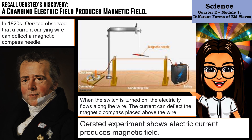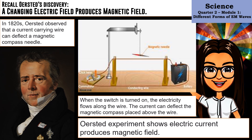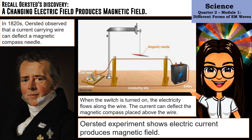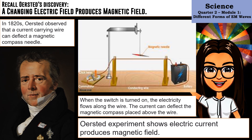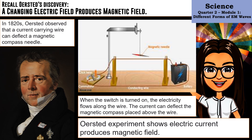According to Ersted's discovery, a changing electric field produces a magnetic field. Ersted's discovery happened in the 1820s. He observed that a current-carrying wire can deflect a magnetic compass needle.